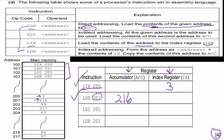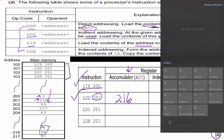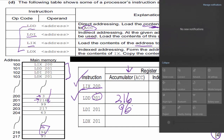Now we have LDI 201. Indirect addressing says: at the given address is the address to be used; load the contents of this second address to the accumulator. So we go to address 201 and see 216. That 216 is itself an address. We then go to address 216, whose contents are 96, and load that into the accumulator.